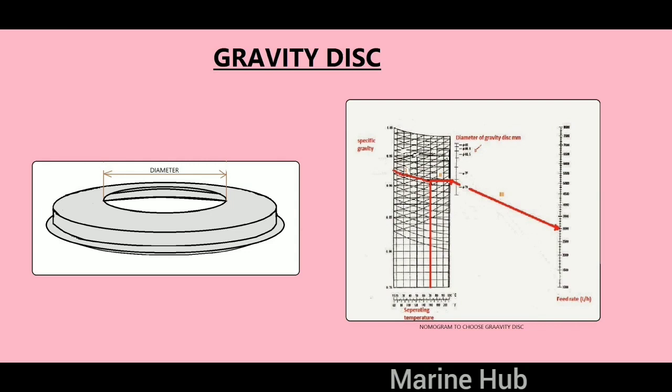The purifier is supplied with a number of gravity discs with different inside diameters. The optimum position of the interface is between the edge of the disc stack and outside edge of the top disc. This can be checked visually by looking at the underside of the top disc after running a few minutes.